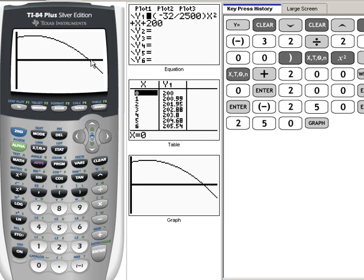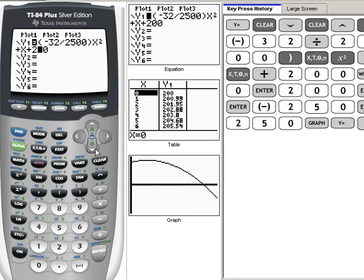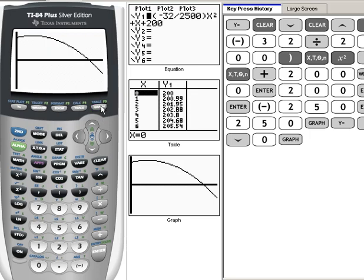On your calculator, if you know a y value and you want to find an x value, we're going to go back into the y equals, and in y2, we're going to type in that y value, which in this case is 0. Now, I'll hit graph.